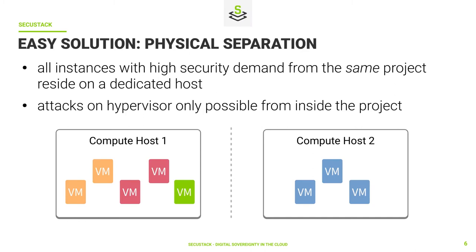The easiest solution would be physical separation — we just put all blue instances on a separate host, or more if there are many VMs. That would make it impossible for someone outside the blue project to gain access via attacking the hypervisor. They are still vulnerable to some insider, but as a project owner you can add and remove access. The downside is this is not very cloud-like and flexible, so we will look into some ways to achieve this.